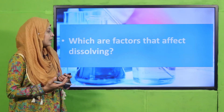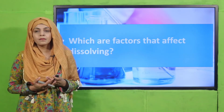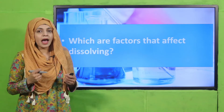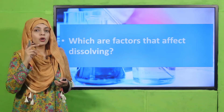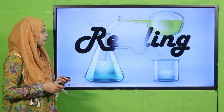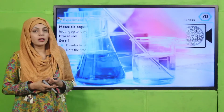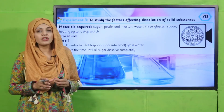The factors that affect dissolving are: temperature, stirring, and breaking the solvent into smaller pieces. Now it is time for the experiment — quickly open page number 70 in your Science 5 books.